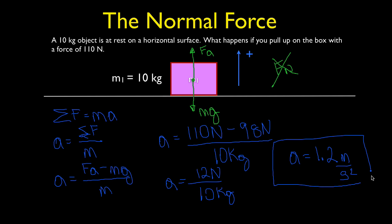The box is accelerating at 1.2 meters per second squared. Because the applied force is greater than the weight, there is no normal force, and the box accelerates in the positive direction. This was a good opening exercise on conceptual ideas about the normal force — how it can change, how it's not always equal to the weight of the object, and how we can use Newton's second law to find the normal force and acceleration. Thanks for watching.